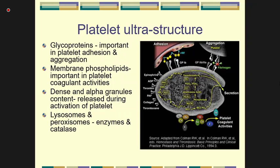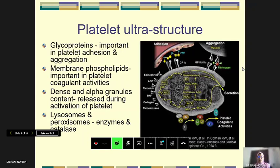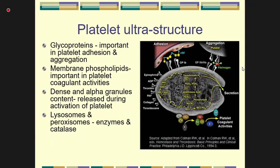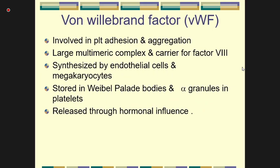There is also formation of thromboxane A2 from prostaglandin. This thromboxane is secreted out and plays a role in hemostasis. As seen in the diagram, the glycoproteins are used during adhesion as well as attached to fibrinogen for aggregation. The bottom part is where the coagulation cascade takes place on the membrane phospholipid, along with the secretion of thromboxane A2.